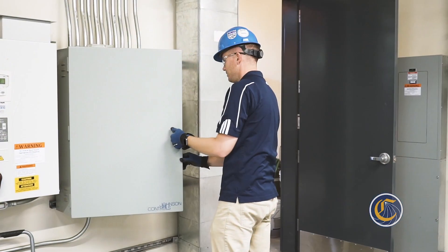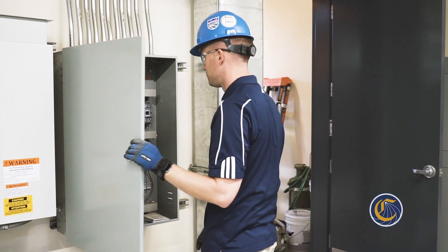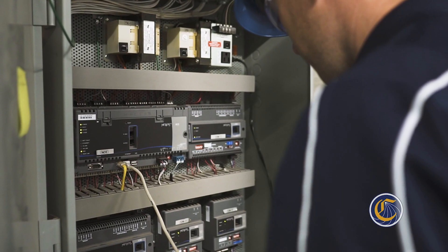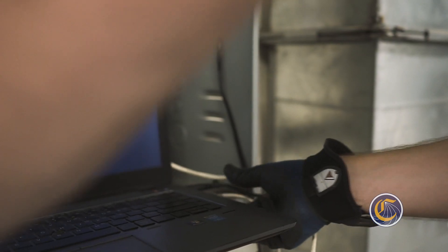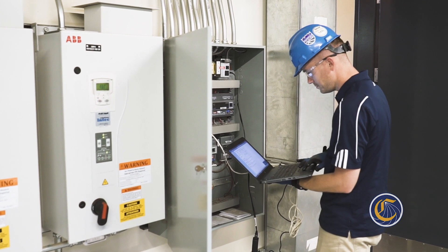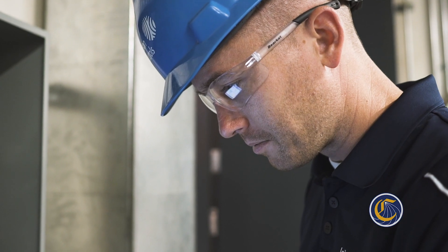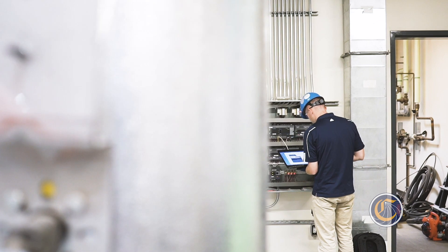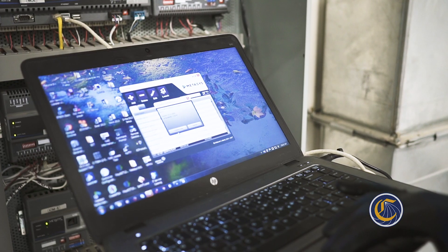To be a controls technician, you have to know about multiple trades. It's kind of like you have to major in controls software, have your minor in electrical engineering, a minor in IT networking, because the controllers that we have out there in the building are all networked together so that we can see them at one central computer.